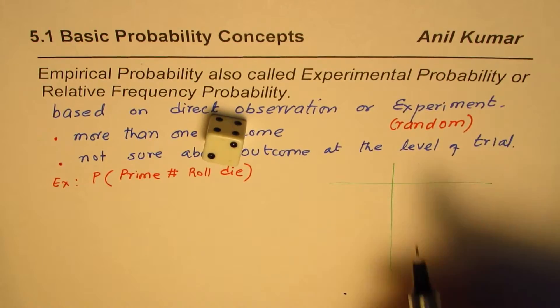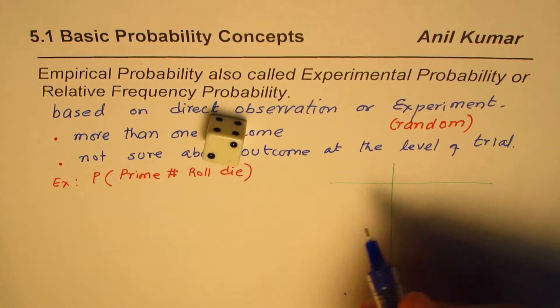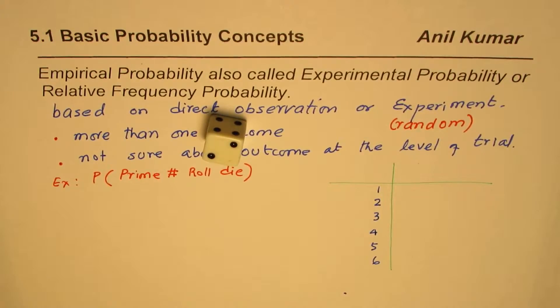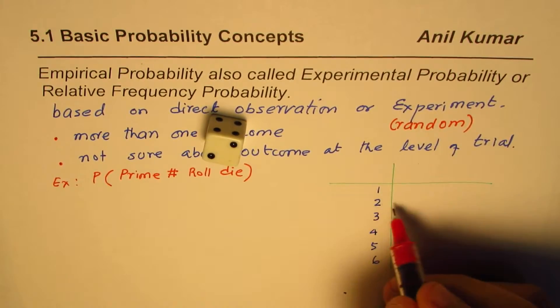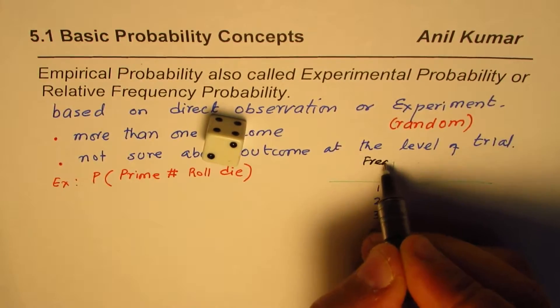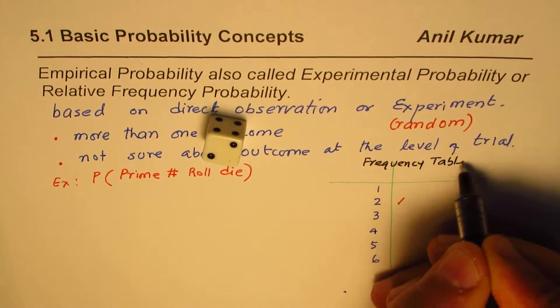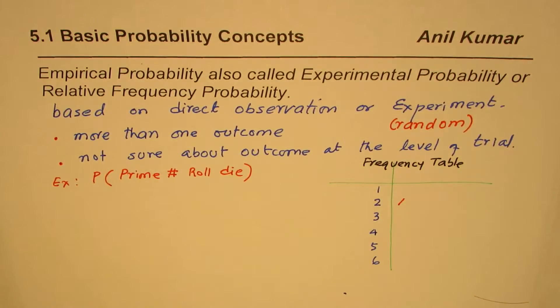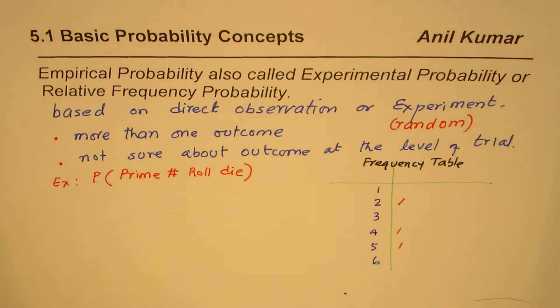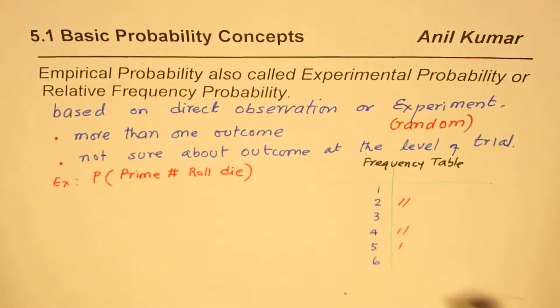So the possible numbers which you could get are one, two, three, four, five or six. Now, if you get two, then we'll write one line here. So one time you did an experiment, you write one here. This is also called a frequency table. So that is how we get relative frequency probability as one of its name. So let's do it again. We get four this time. And then we get five. And then we get four again. And then we get two.